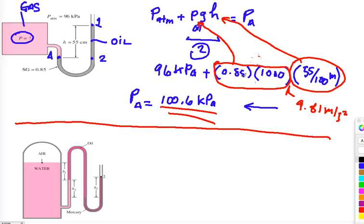0.85 specific gravity times the density of water. This will give you the density of oil and 55 centimeters is actually the height of the manometric fluid. I forgot the gravity here, so you've got to add 9.81 to the equation. Nonetheless, the answer is still 100.6 kPa.